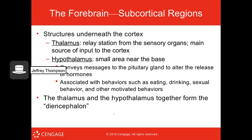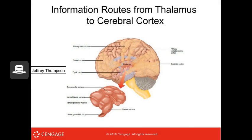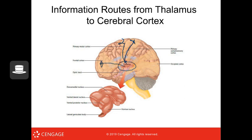The subcortical regions below the cortices include the thalamus, which is the relay station from sensory organs and the main source of input into your cortices. The hypothalamus controls the pituitary gland, which releases hormones, and is associated with eating, drinking, sexual behavior, and other motivated behaviors. Together the thalamus and hypothalamus form the diencephalon. A diagram shows the thalamus in the center sending information to different parts of the brain.